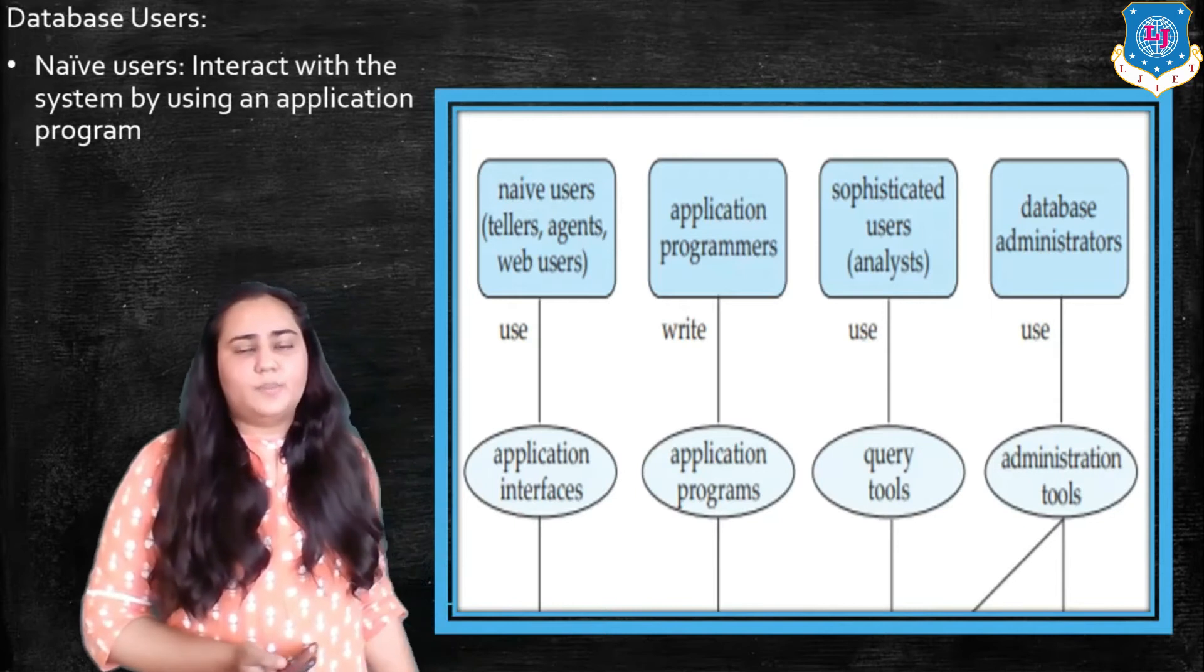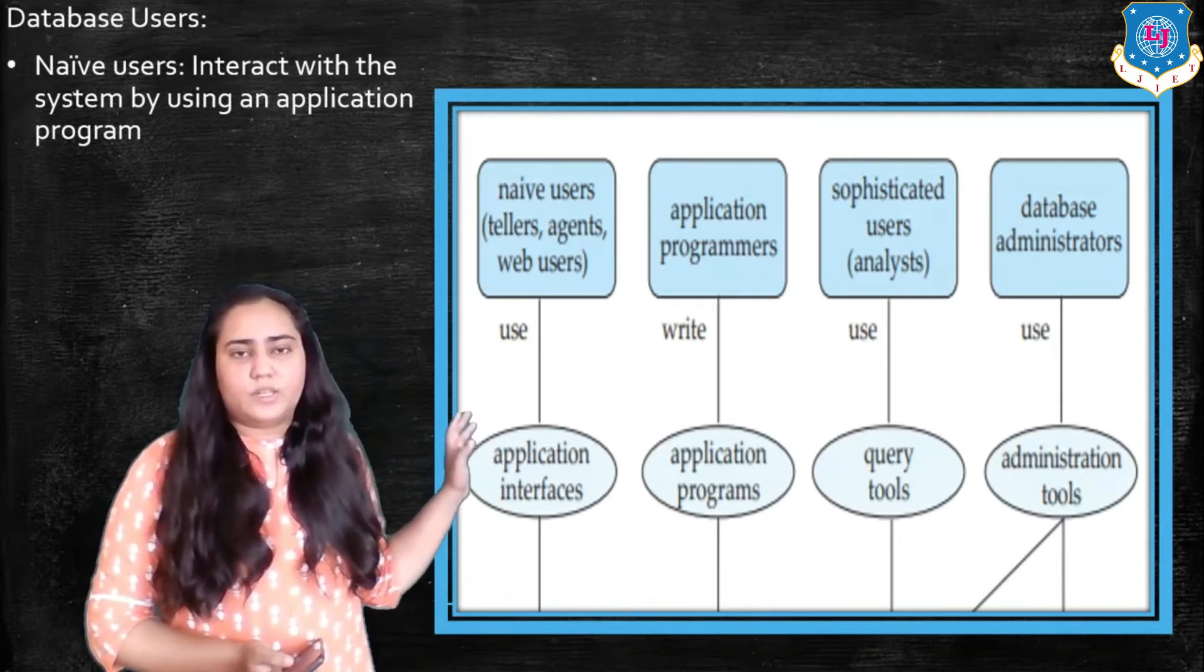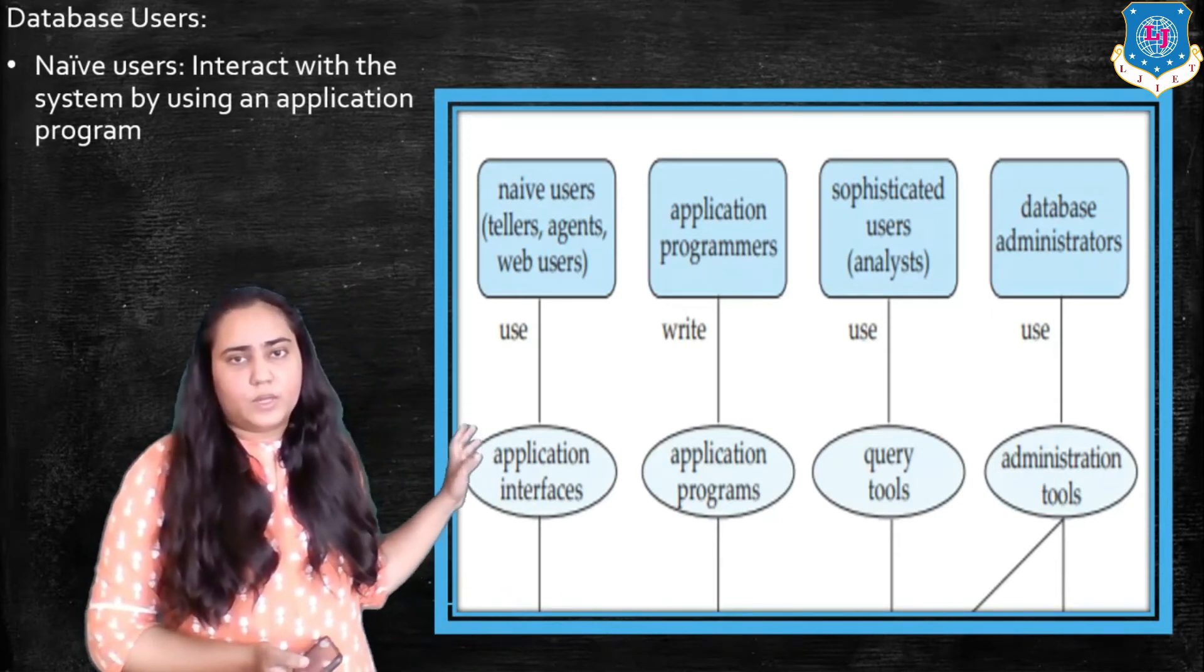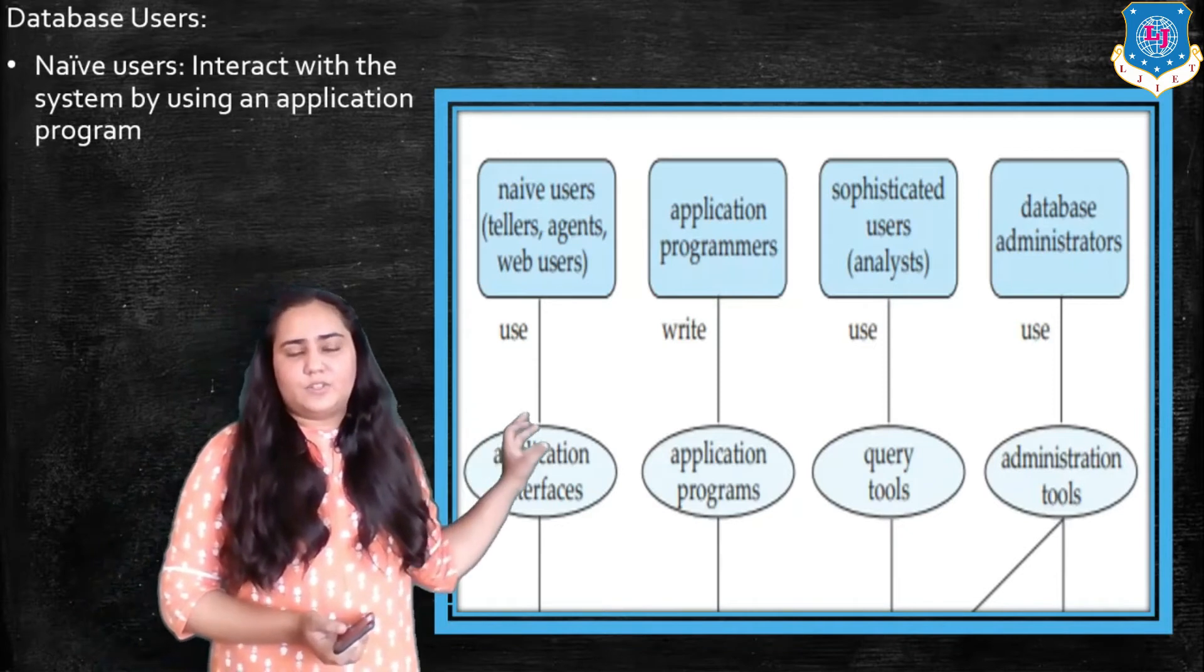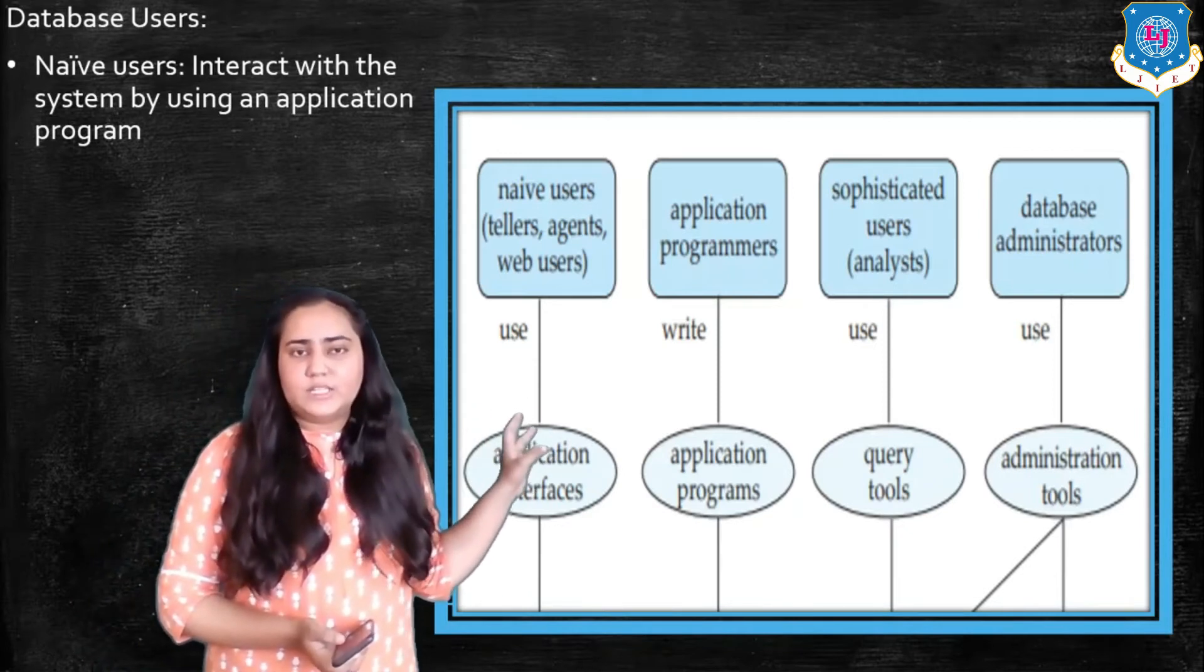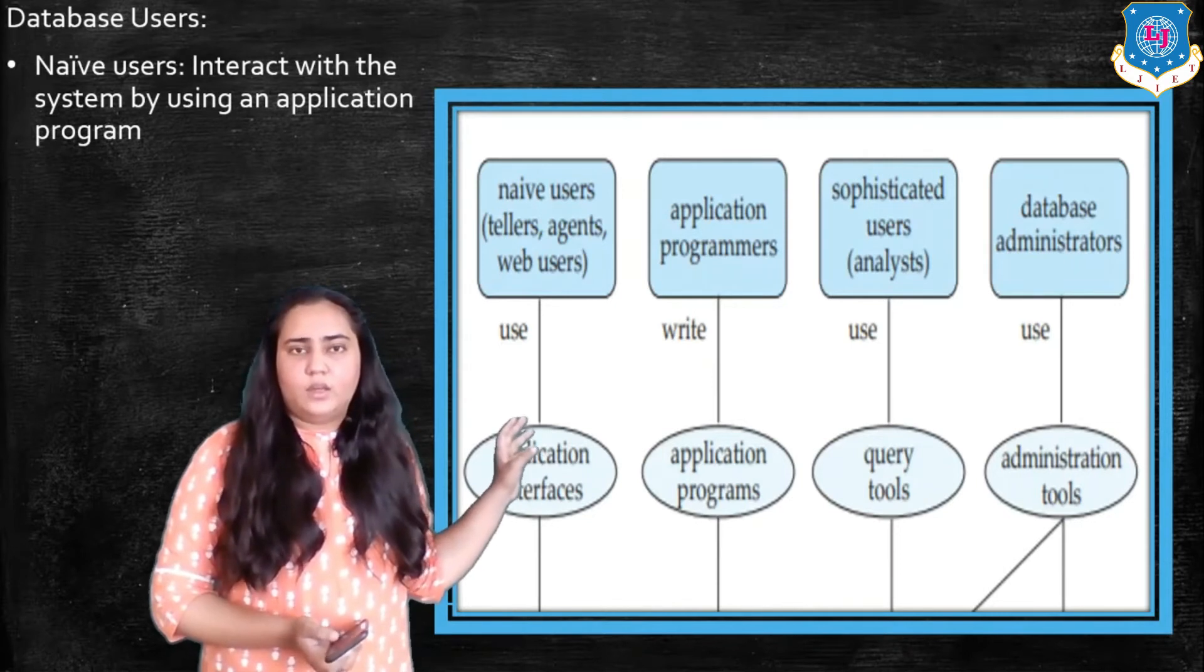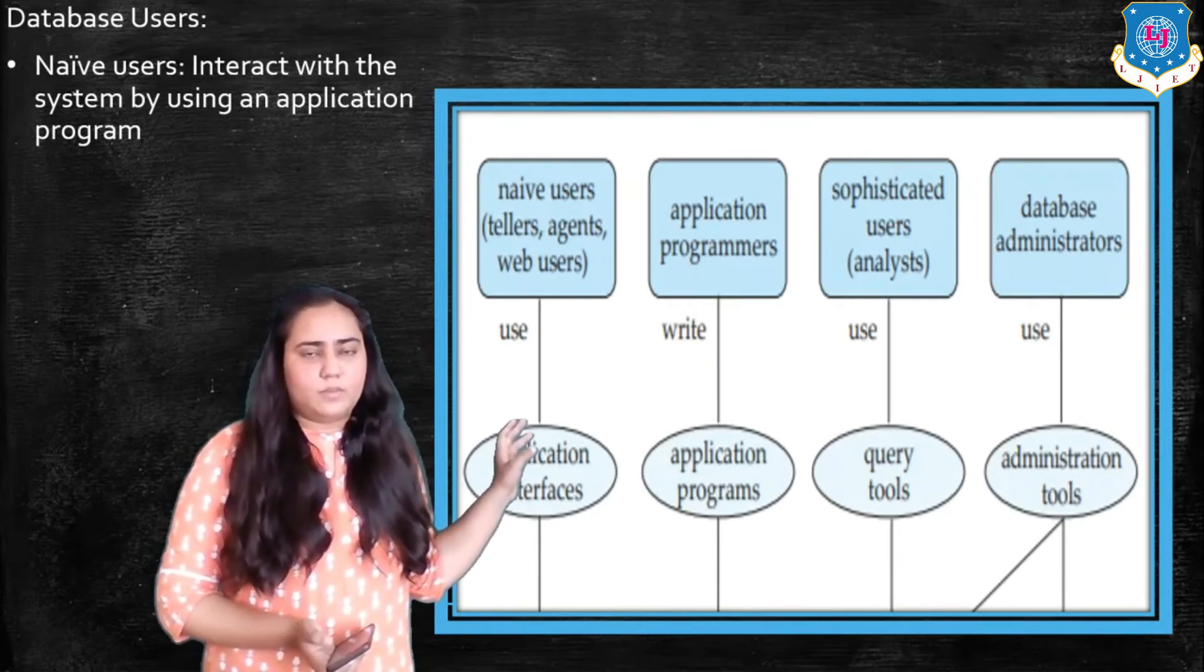So the first type of users we have are called naive users. These are all agents and web users and tellers. These are people who do not know anything about databases at all.